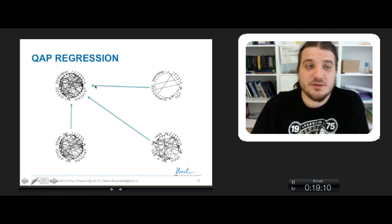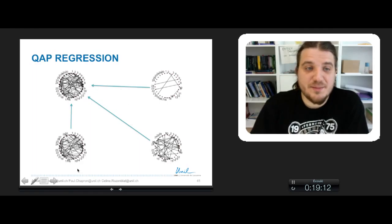Graphically, this is about rendering if the links here can be correlated or influenced by the links of this network, this network, and this network.